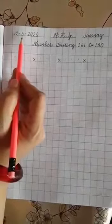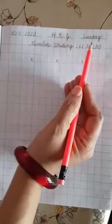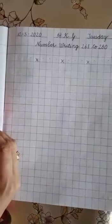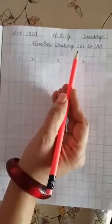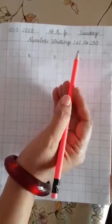Write the date 12-5-2020. Today is Tuesday. In previous classes, we have completed the number writing from 1 to 260. Today we will learn how to write numbers from 261 to 280. Let's start our work.